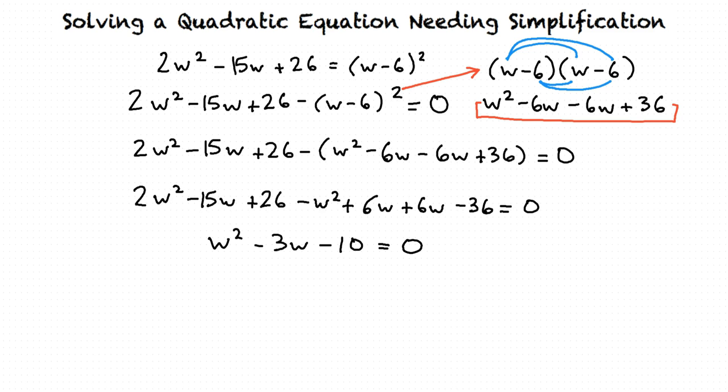Now we have to factor this and solve for w. To do so, we find 2 factors of negative 10 that also add together to equal negative 3. Here is a list of factors of negative 10. We will find the sum of each one until we find a sum of negative 3.